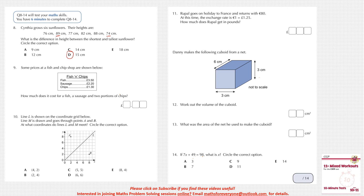Some prices at a fish and chip shop are given. How much does it cost for a fish, a sausage, and two portions of chips? One fish costs £3.50, one sausage costs £2.20, and two portions of chips cost £1.30 × 2 = £2.60. Adding them up: £3.50 + £2.20 + £2.60 = £8.30.